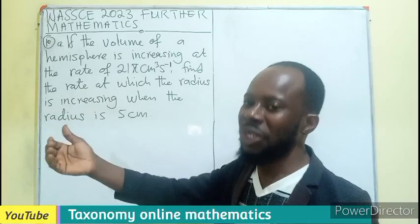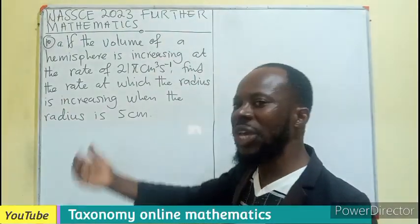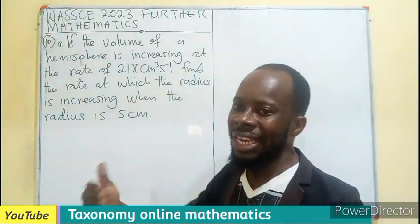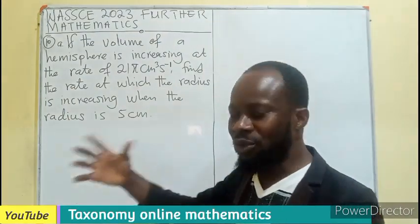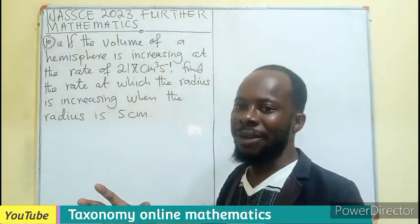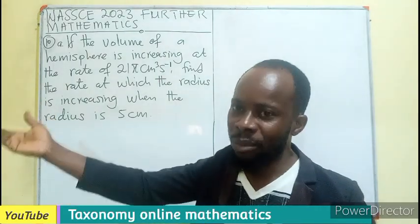We have a rate of change, and the rate of change can also be likened to the chain rule, whereby we have two different sections with respect to two different variables.